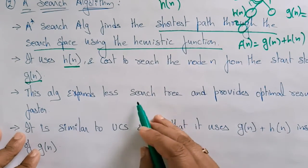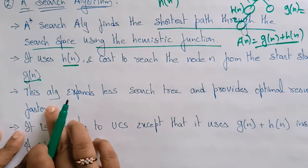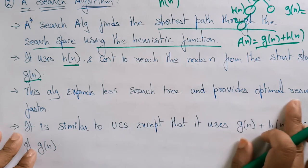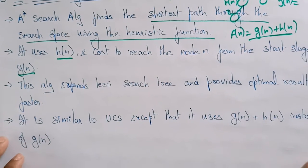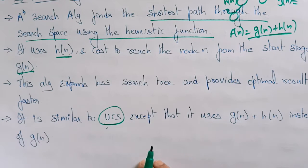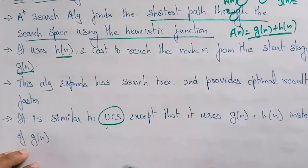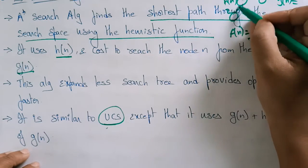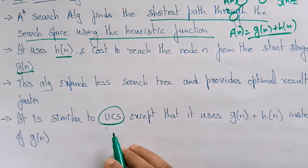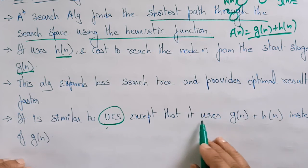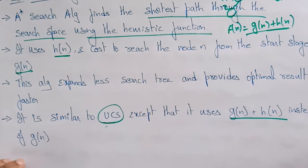This algorithm expands less of the search tree and provides optimal results faster. It is similar to the uniform cost search because in uniform cost search we give values — the cost of that path on the tree — and here also we are giving values on the path, that is the estimated cost for that path.